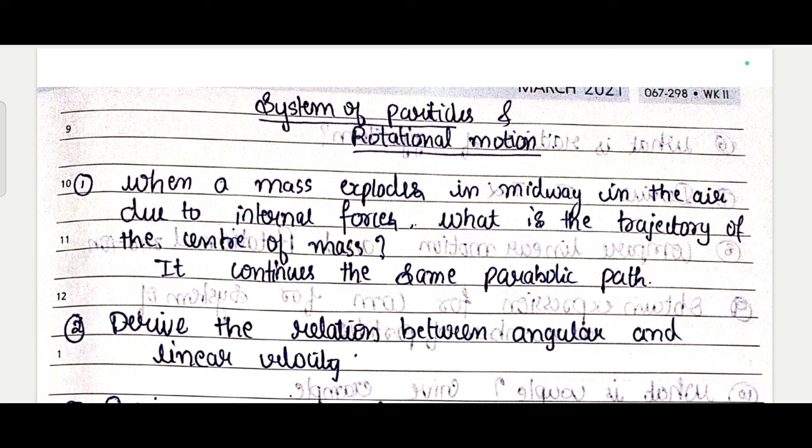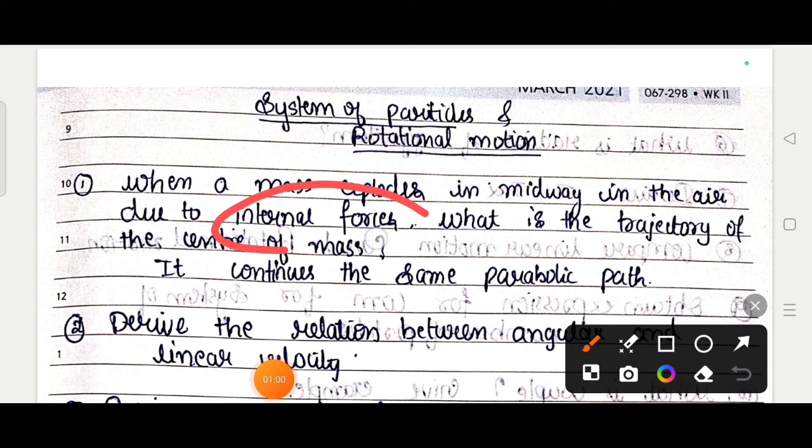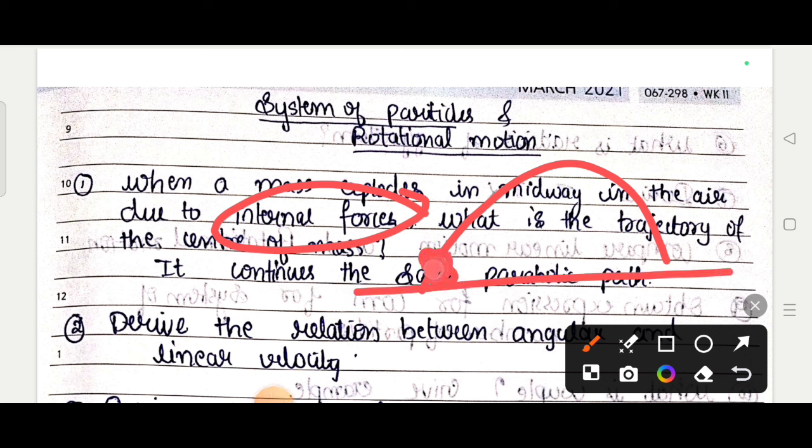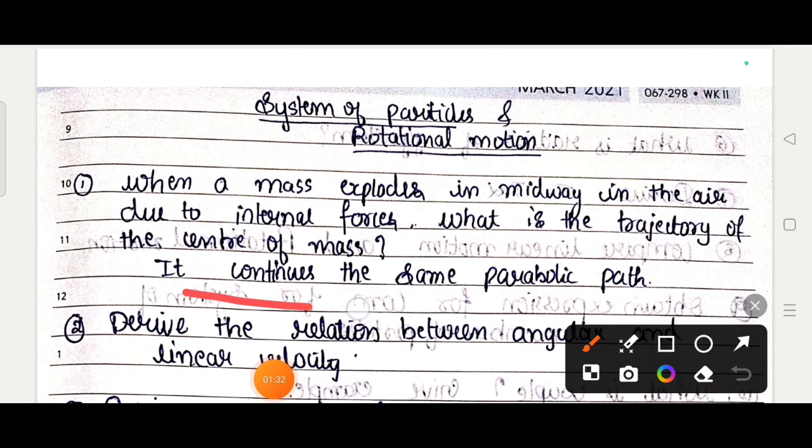When a mass explodes in midway in the air due to internal forces, what is the trajectory of the center of mass? So, assume an object is moving in this particular direction, and at this point it explodes into pieces due to internal force. Even after this instant, the center of mass continues to move in this particular direction - the same parabolic path. So the answer is: it continues the same parabolic path.